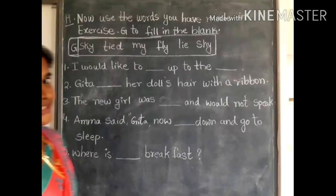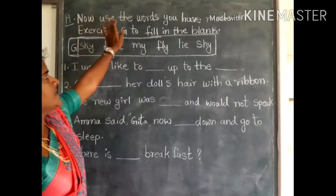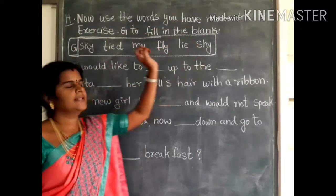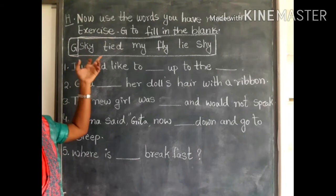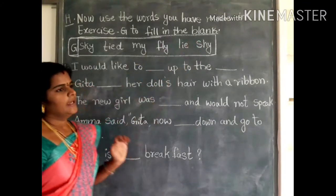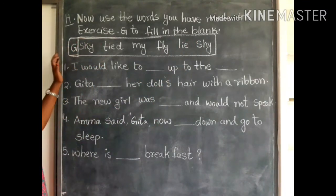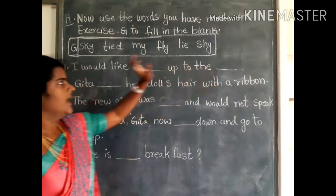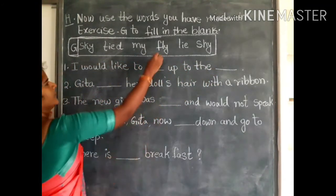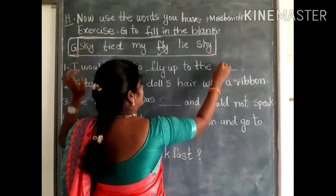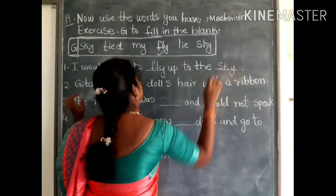Now, use the words you made in exercise G to fill in the blanks. The words are: sky, tide, mine, fly, lie, shy. By using these words you have to fill in the five blanks. First one: I would like to fly up to the sky. I would like to fly up to the sky.